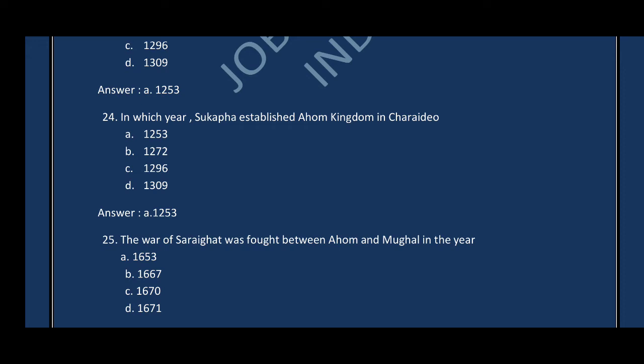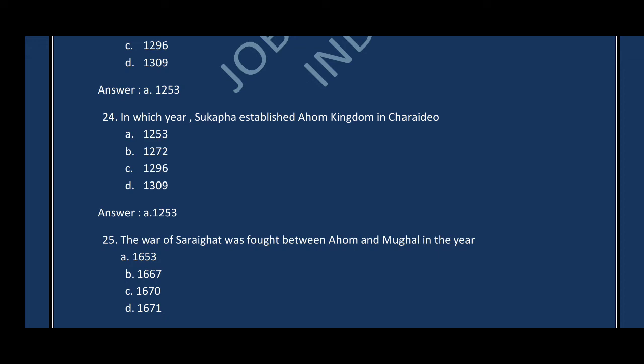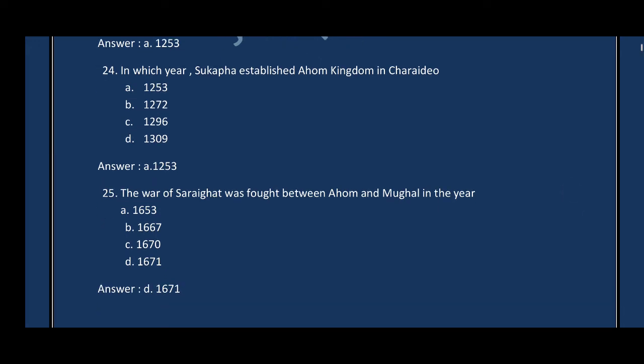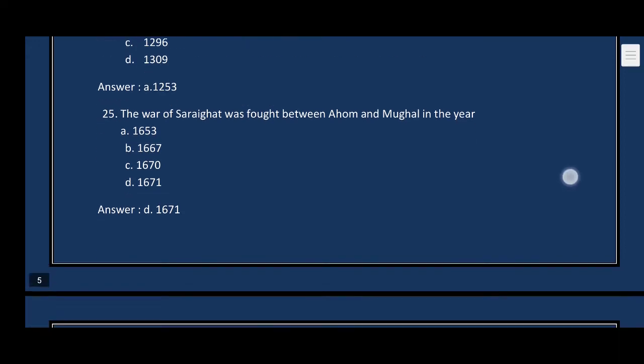Note: Sukapha's arrival was in 1228. Question number twenty-five: The Battle of Saraighat was fought between the Ahom and the Mughals in which year? The correct answer is option D — 1671.